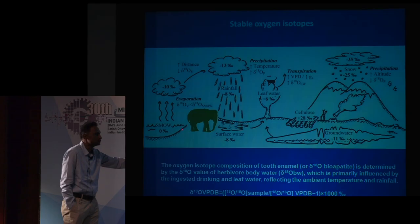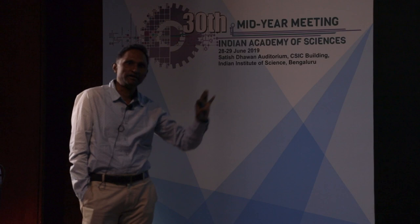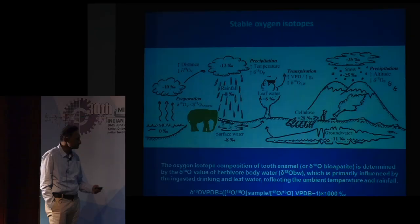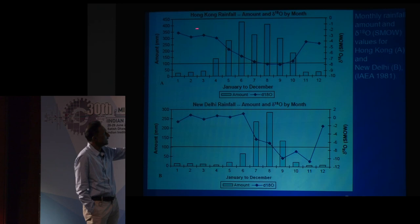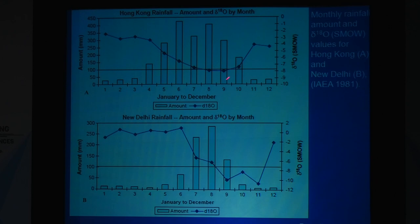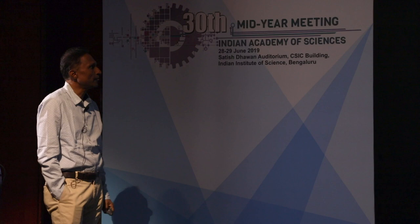An animal like an elephant that consumes this water — it will go into its system while the teeth are growing, and the oxygen goes into the apatite. One can find out whether that animal lives in a tropical, subtropical, desert arid, or temperate area. This is shown in Hong Kong and New Delhi data, where there is a sinusoidal curve of oxygen isotope values varying with rainfall seasons.